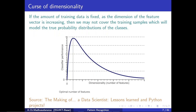With only one feature — for example, hair color — you can't determine whether there is a human in an image. You need all the relevant features related to eyes, nose, ears, and other facial characteristics. As the number of relevant features increases, the information available for classification also increases. That is the reason for the performance growth in the initial range.